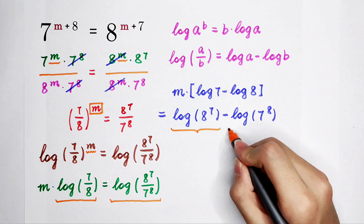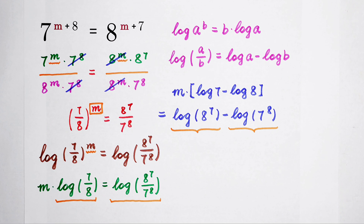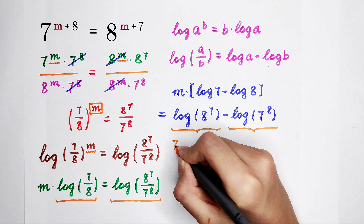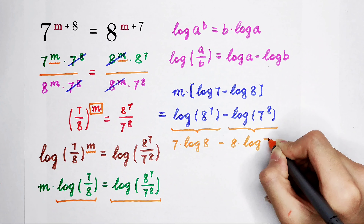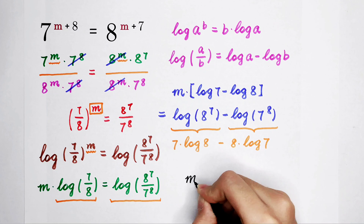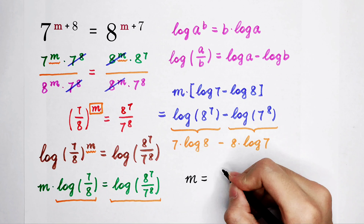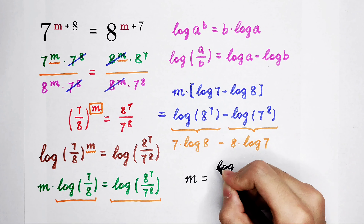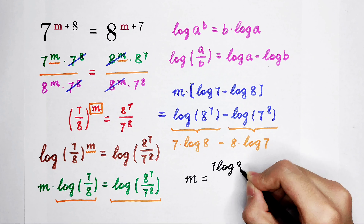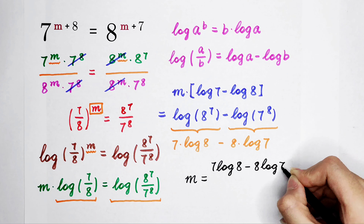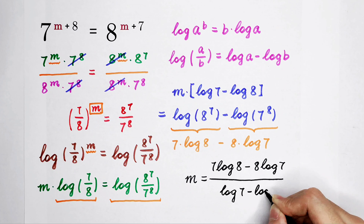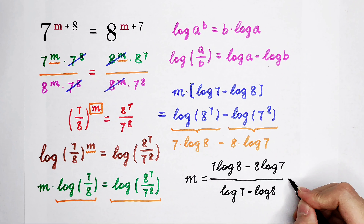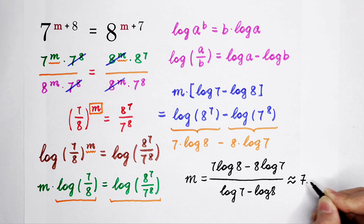Now this log 8 to the power of 7 and log 7 to the power of 8 can be further simplified. So we can get our answer: m is equal to the numerator, which is 7 times log 8 minus 8 times log 7, all divided by log 7 minus log 8. By the way, it is approximately equal to 7.571.